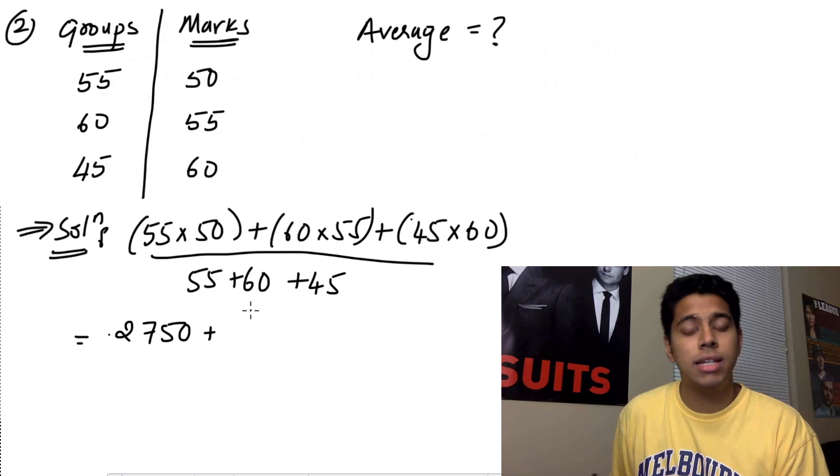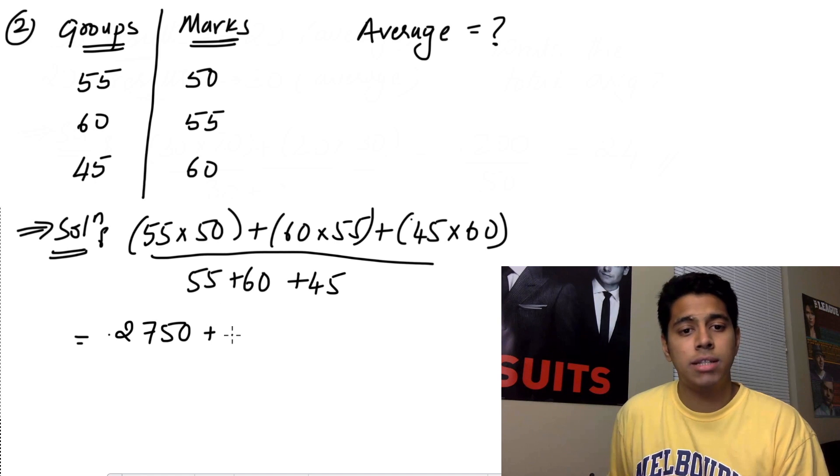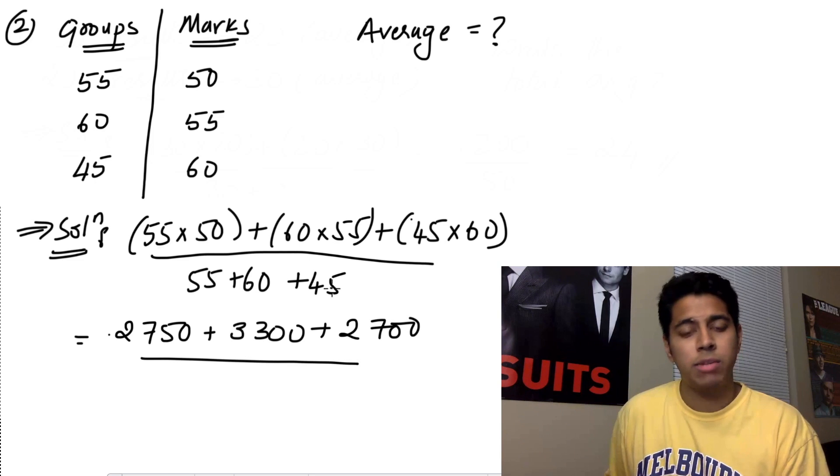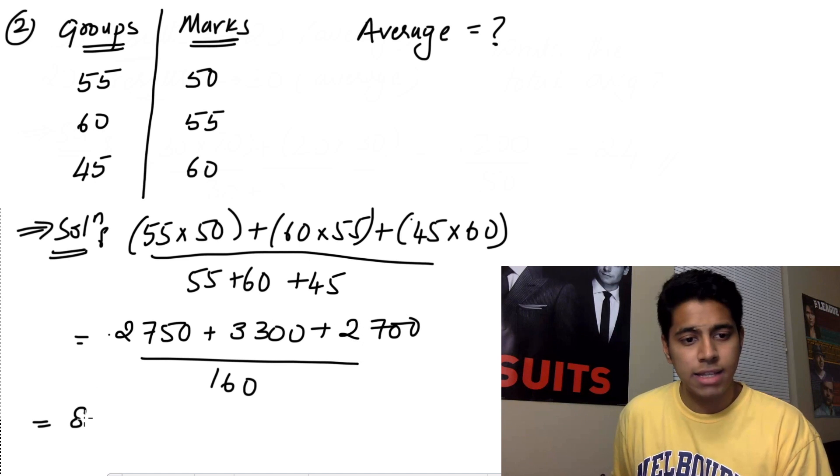Plus 60 into 55 is going to be 3300. Plus 45 into 60 is going to be 2700. Divided by 55 plus 60 plus 45. 60 plus 45 is 105, 105 plus 55 is 160. This is going to be 8750 divided by 160.